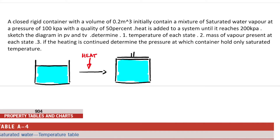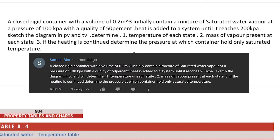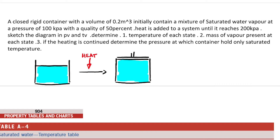Hello guys and welcome back to Engineering Hack, where we try to solve engineering problems in a way that's hopefully easy to understand. Today we're doing a question dropped in the comments by Samir. His question: a closed rigid container with a volume of 0.2 meters cubed initially contains a mixture of saturated water vapor at a pressure of 100 kilopascals with a quality of 50%. Heat is added until it reaches 200 kilopascals. Sketch the PV and TV diagram, determine the temperature of each state, the mass of vapor present at each state, and if heating is continued, determine the pressure at which the container holds only saturated vapor.